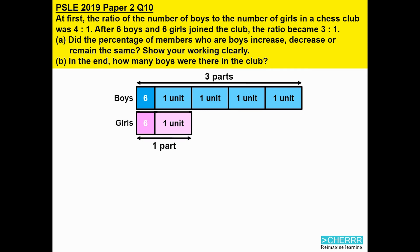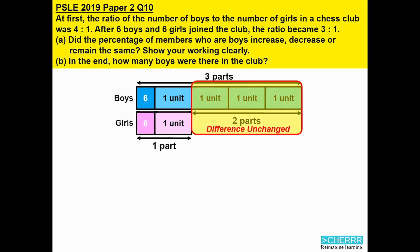The difference between these is now 2 parts. In this question, both variables have changed — boys have changed, girls have changed, totals have changed — but there is one item that did not change: the difference. Although the difference did not change, at first it was known as 3 units and now it is known as 2 parts, so we need to make this difference exactly the same. The fastest way is to use a ratio.